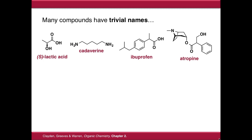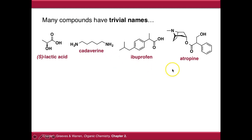So many molecules in organic chemistry have trivial names, and these may be archaic, they may be derived from where the compound was isolated, there may be drug names as in the case of ibuprofen, or they may describe certain properties of the compound — for example, cadaverine is the smell of cadavers or dead bodies.